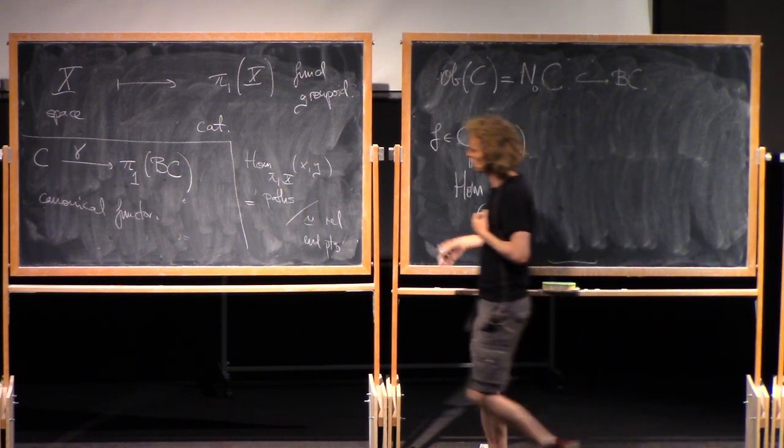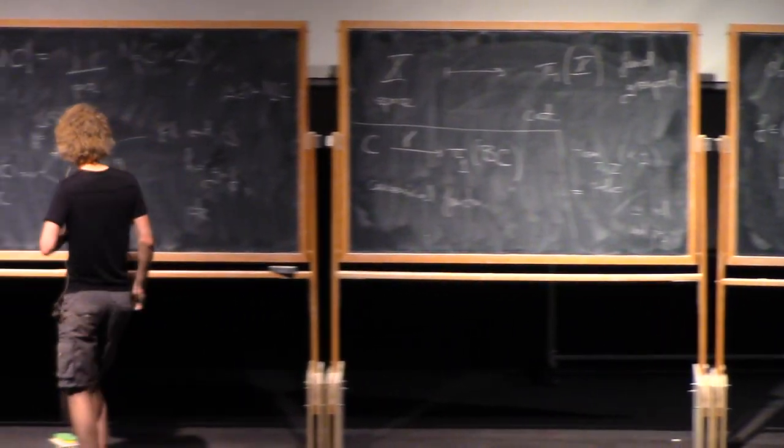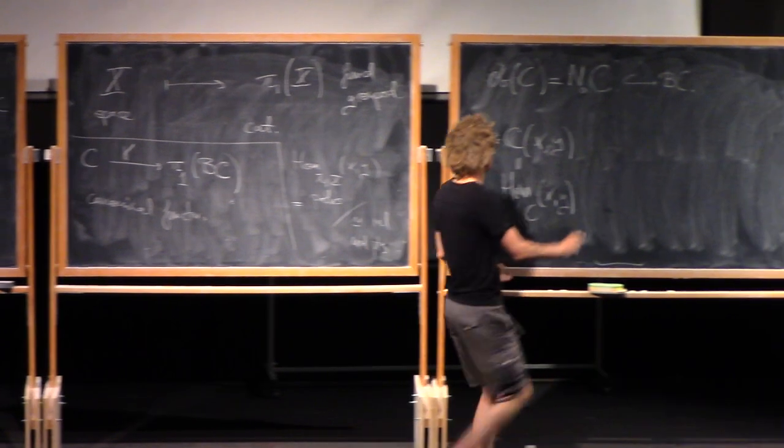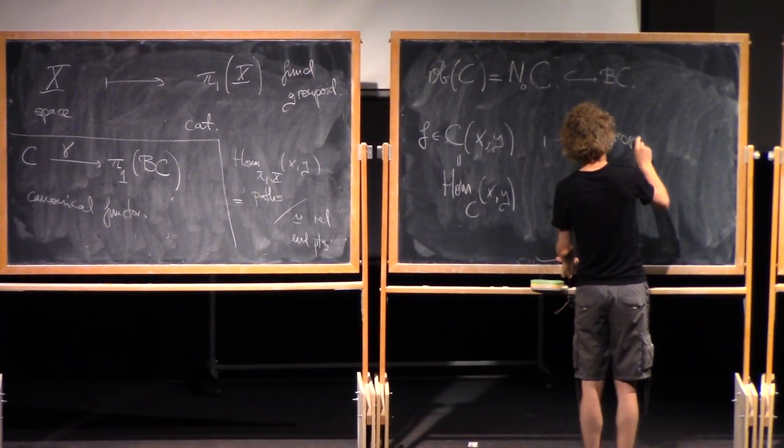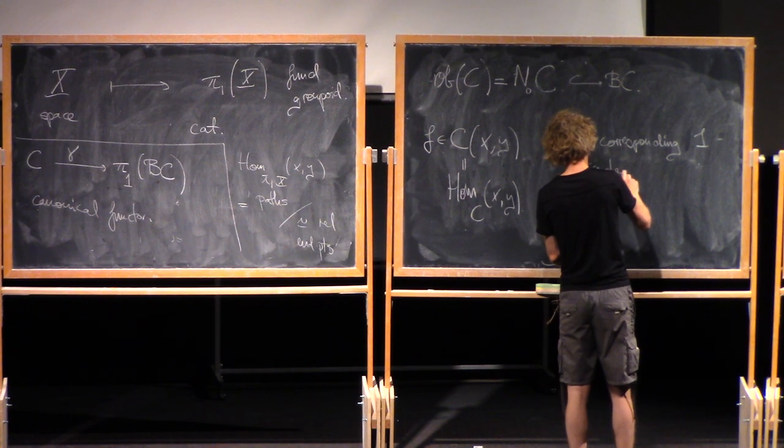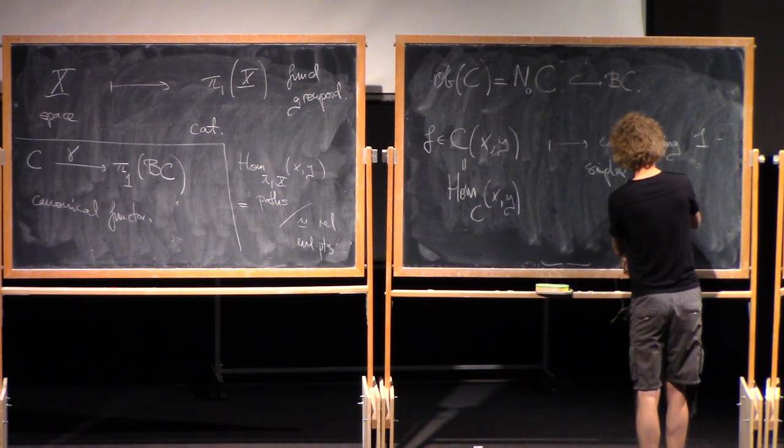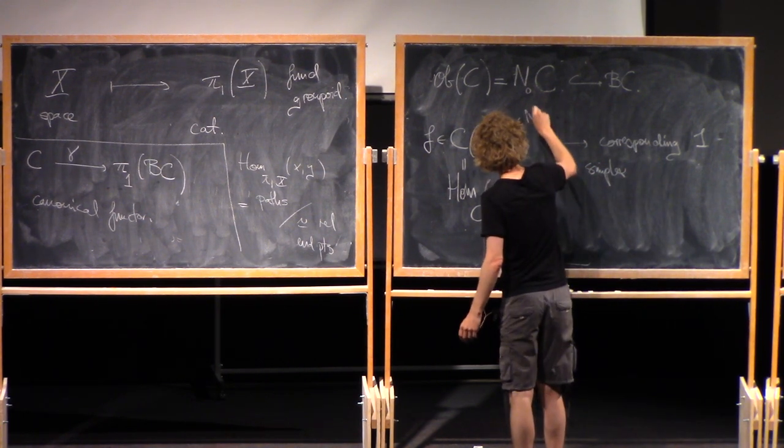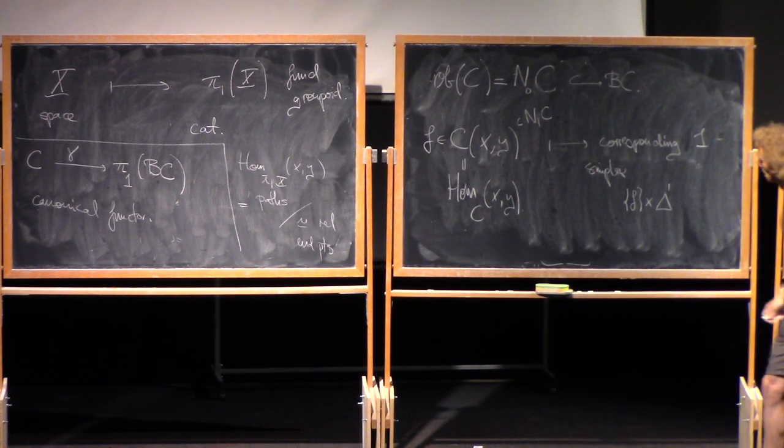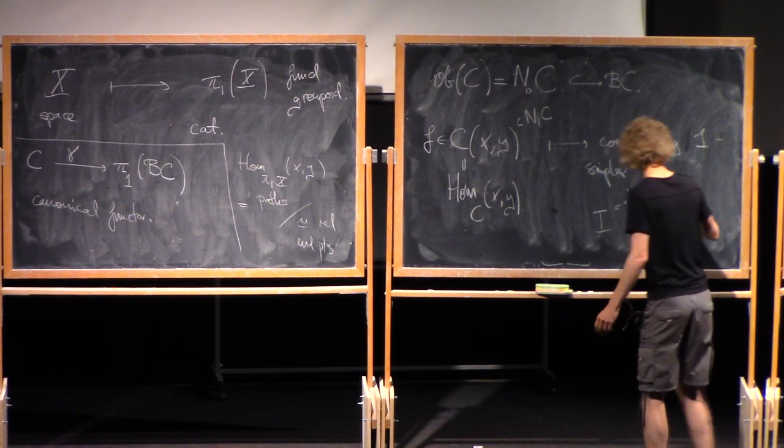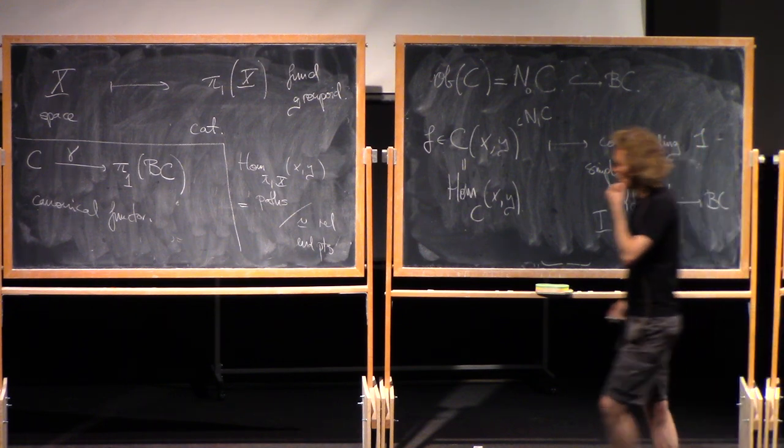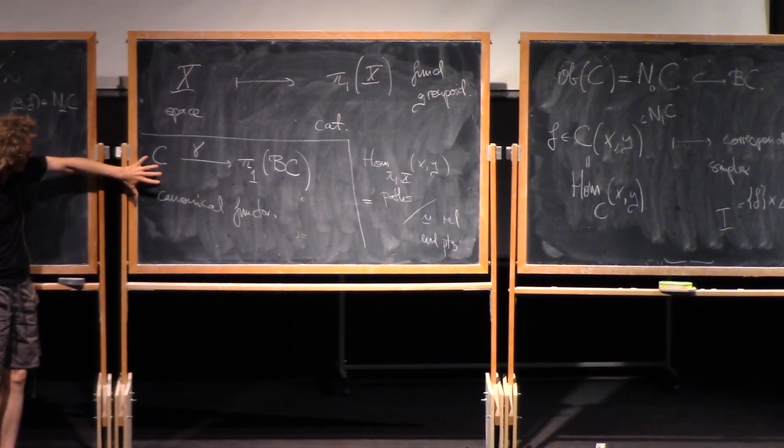The way BC is constructed, the one simplices are precisely the morphisms. So for each morphism, there's a canonical path from x to y by definition. So I send this to the corresponding one simplex. So I guess it would be - so this sits inside N1 of C. So strictly speaking, the notation would be something like F cross δ¹. And then you parameterize this as the interval. And this canonically maps to BC. The path starting at x and ending at y. So that's what this canonical functor does on morphisms.